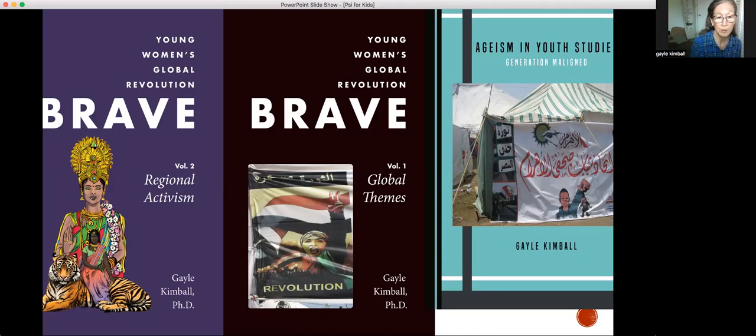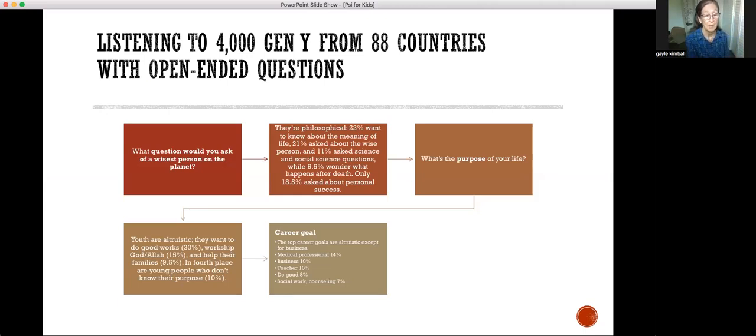The youth studies book was really interesting because I found that scholars rarely talk to youth, and certainly not in open-ended questions. There are very few quotes from youth. If they talk to them, it's multiple choice—what's your drug use, tobacco use, that kind of thing. We need to approach youth with respect and ability to listen. So what did I find? This is Gen Y. My favorite question was: What question would you ask the wisest person on the planet? They're philosophical—22% want to know about the meaning of life. That's important to think about—they want to understand why we're here.